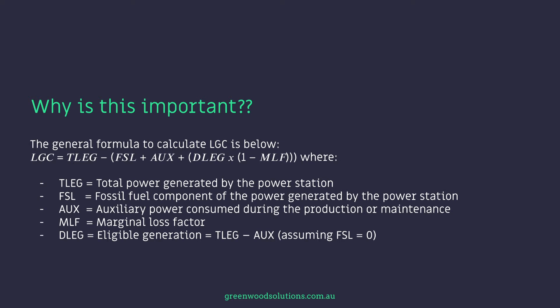The general formula to calculate LGCs: TLEG means total power generated by the power station — in this case, the commercial solar system. FSL is the fossil fuel component of the power generated by the power station; in this case, it is zero. AUX is the auxiliary power consumed during production or maintenance. MLF is the marginal loss factor. DLEG equals the eligible generation, which equals TLEG minus auxiliary, assuming the fossil fuel component is zero. Okay, maths — we love it. No, we don't.